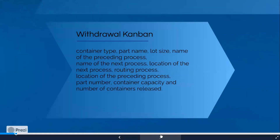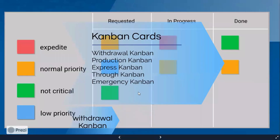Take a look at the withdrawal Kanban — in the production line, when they need some material from storage, that's a withdrawal Kanban. There are various types of Kanban: withdrawal Kanban, production Kanban (ordering production), express Kanban (sending it fast), expedite, through Kanban (sends the process through things), and emergency Kanban — what you need as fast as possible.